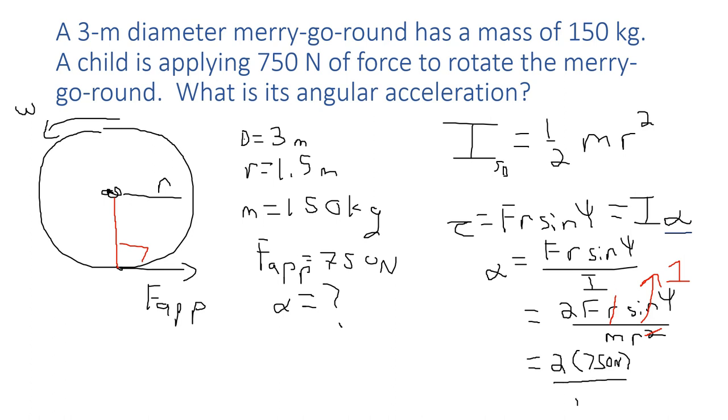So we can divide by mass of the merry-go-round which is 150 kilograms times radius which is 1.5 meters. Notice what the units turn into. Remember newtons are kilograms meters per second squared. Kilograms divide away, meters divide away, so we get per second squared.